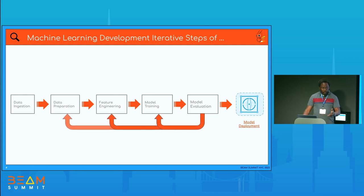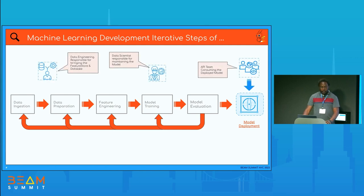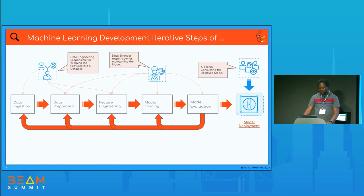It's a bit more complex — you go through all these stages iteratively; you go back each step, retrain and rebuild. Over the lifecycle of any ML project, especially big ones, you have data engineering people responsible for preparing your data, data scientists who need data from the feature store to train the model, and once you train the model you deploy it and someone on the API side picks it up and uses it. All these interactions happen over the ML project lifecycle.